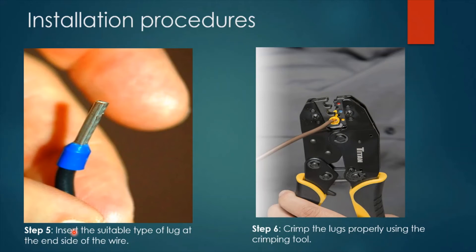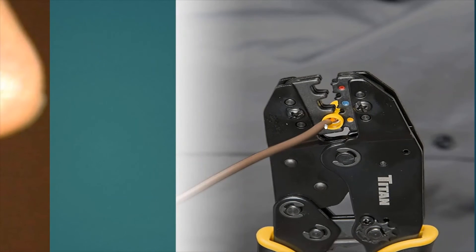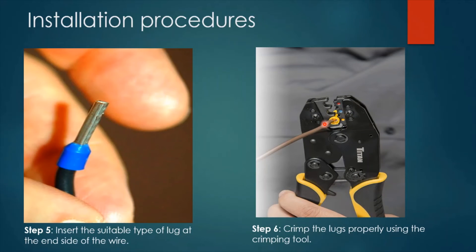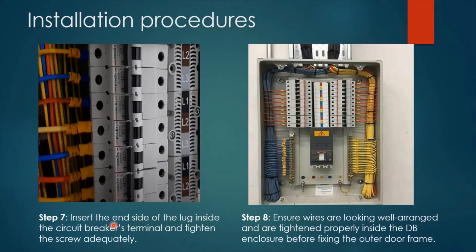Step five is to insert the suitable type of lug at the inside of the wire. Step six is to crimp the lugs properly using the crimping tool. Step seven is to insert the inside of the lug into the circuit breaker's terminal and tighten the screw adequately. This is exactly what is meant by termination — inserting all the wires into the assigned circuit breakers according to the DB schedule.